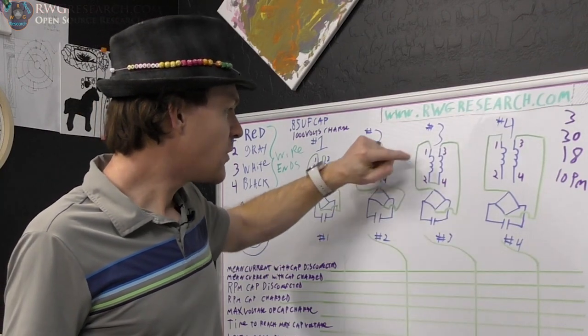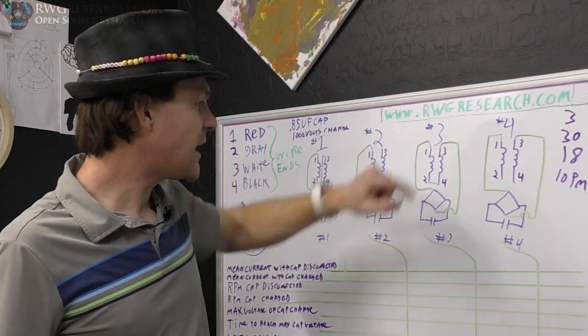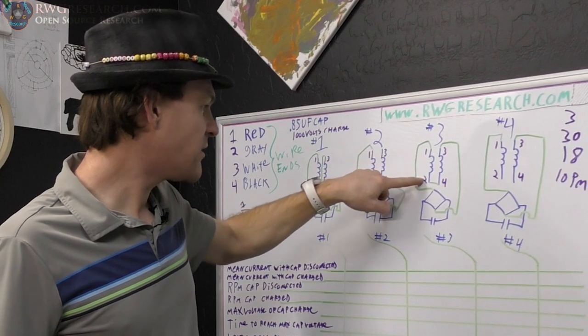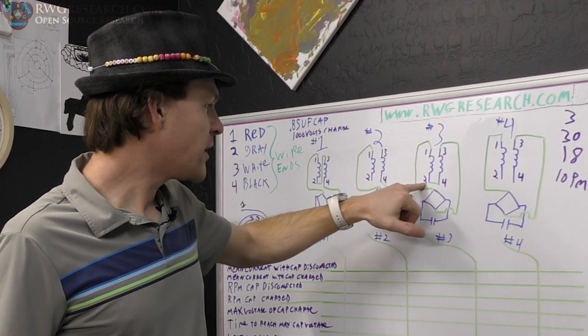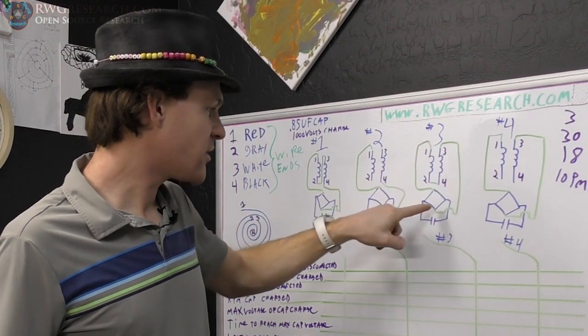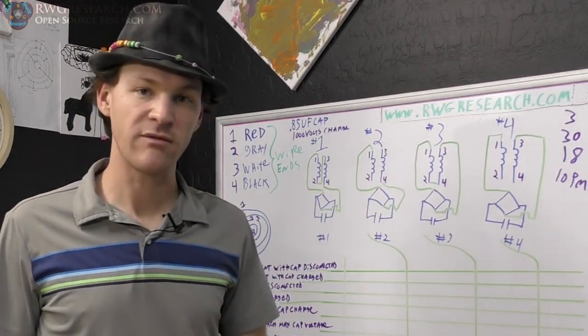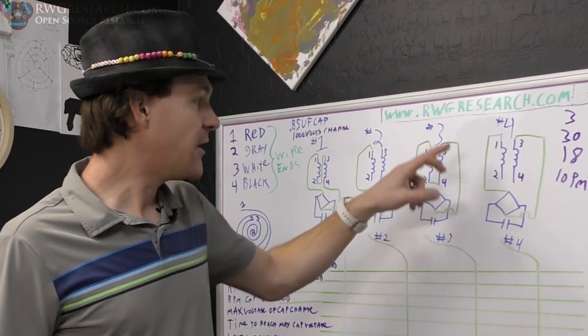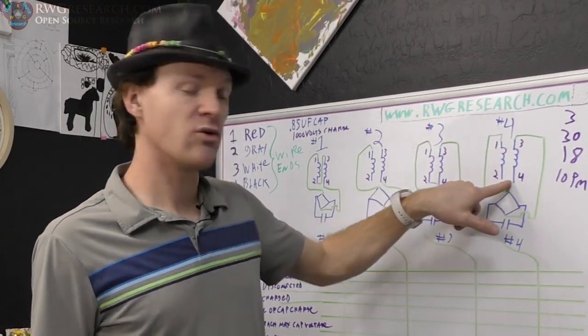Test number 3, we're going to run these guys against each other. So 1 and 2, 3 and 4, we're going to be jumpering 2 to 4, and we're going to be using 1 and 3 as our output to the full wave bridge to the cap.